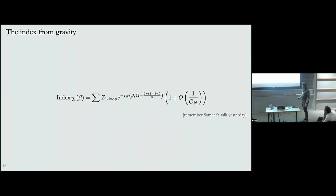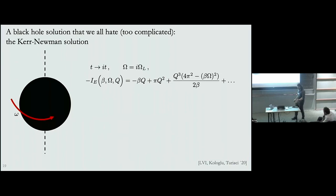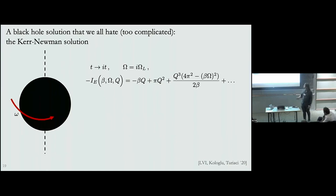Suppose I have an extremal Reissner-Nordström black hole. This calculation is instructing me that if I want to compute the index, I shouldn't go to zero temperature and compute the extremal entropy — that's not trustworthy. Instead, I should just turn on an angular velocity. The Kerr-Newman solution is quite involved, but its Euclidean action has been computed in the past, and for simplicity I'll write it in a large-beta expansion.